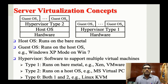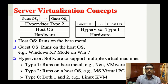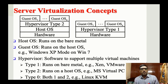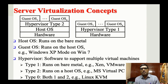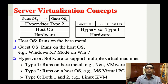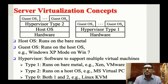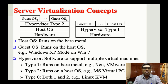The hypervisor is software to support multiple virtual machines — Type 1, Type 2, and Type 0. Type 0 does both Type 1 and Type 2 functions. Type 1 runs on bare metal; examples include Xen, VMware ESXi. Type 2 runs on the host OS; example is MS Virtual PC.